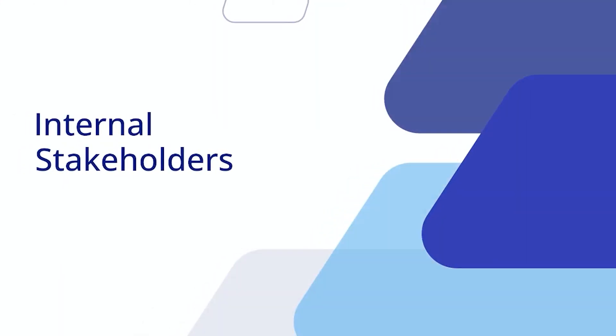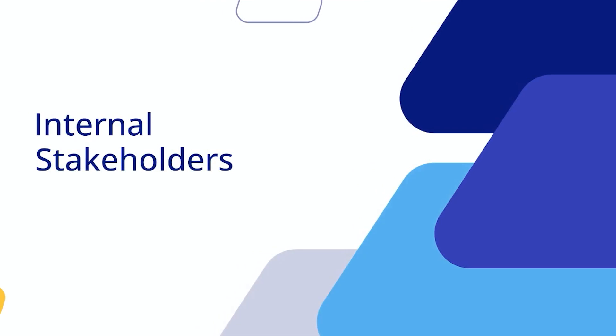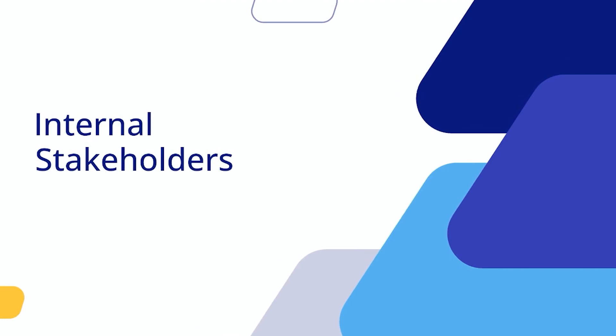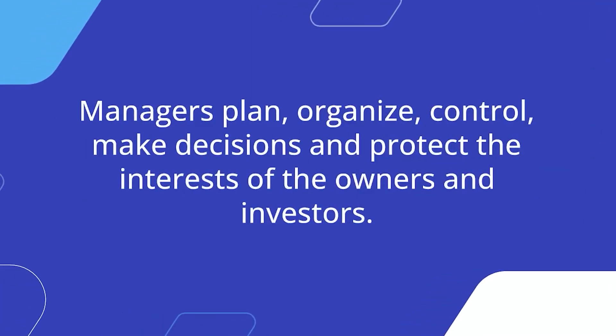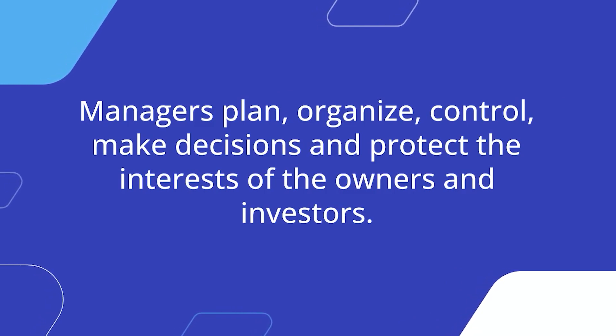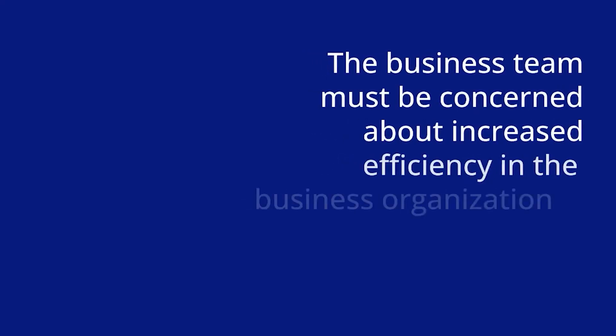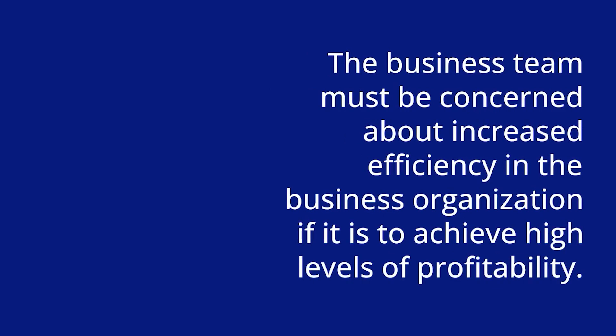The role of stakeholders in business. There are two types of stakeholders: internal stakeholders and external stakeholders. For internal stakeholders, number one: managers. Managers plan, organize, control, make decisions, and protect the interests of the owners and investors. The business team must be concerned about increased efficiency in the business organization if it is to achieve high levels of profitability.